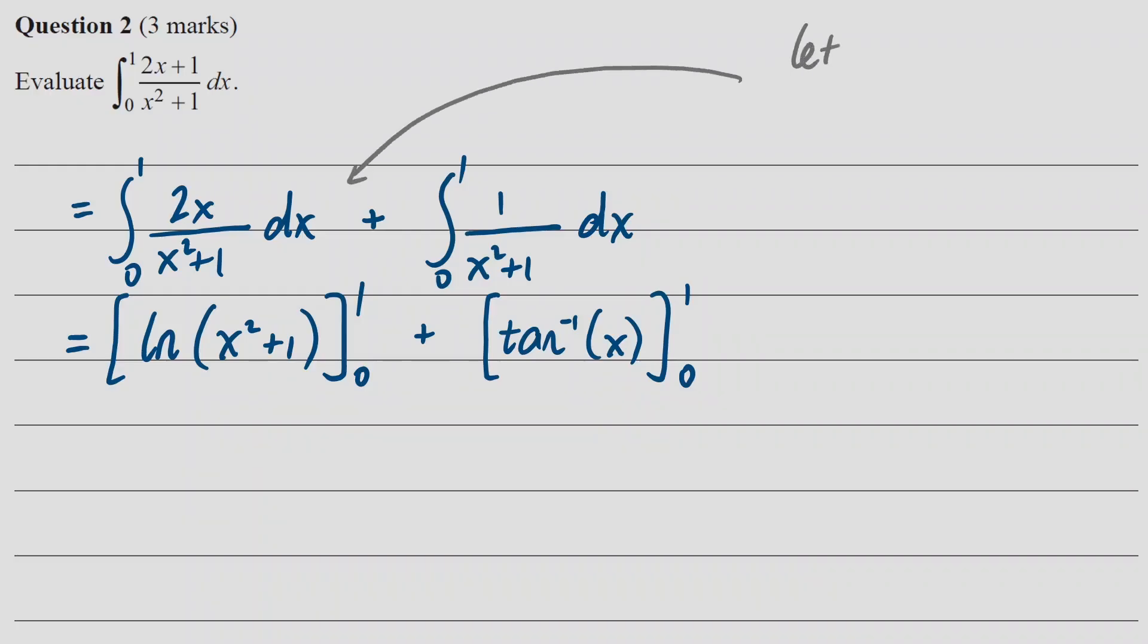Now for that first integral, we could use a u substitution with u is x squared plus one. But if we do that, we then have to rewrite the terminals before we can write the integral in terms of u, and then evaluate it as log of u from one to two. Either way, we're going to get the same answer. But for me, I probably prefer to just skip the u substitution in a situation like that.